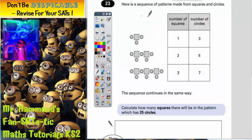Question 23, here's a sequence of patterns made from squares and circles. We've got some squares and some circles, and the results are recorded in the table. We've got number of squares in the first column, number of circles in the second column. It says the sequence continues in the same way. Calculate how many squares there will be in the pattern which has 25 circles.